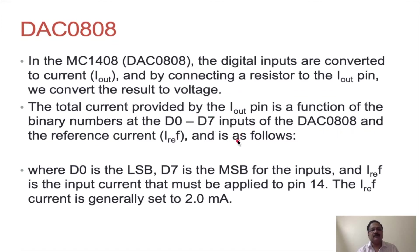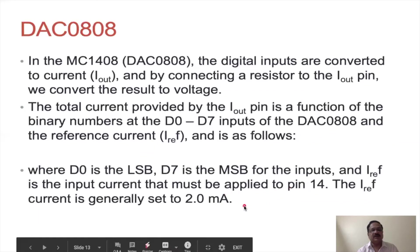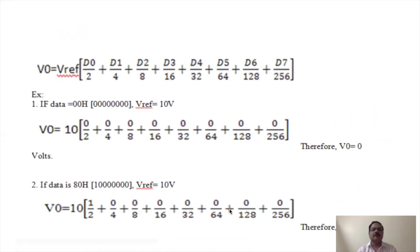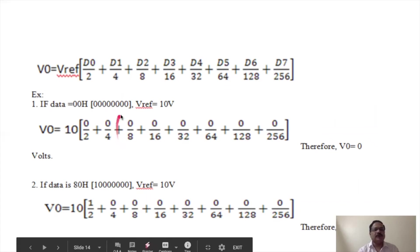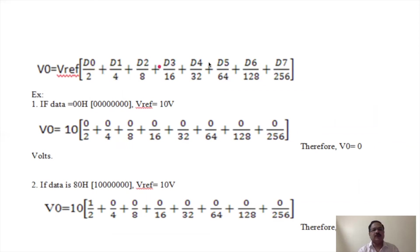The reference current I_reference must be applied to pin 14 and is generally set to 2mA. The output voltage formula is: Vout = V_reference × (D0/2 + D1/4 + D2/8 + D3/16 + D4/32 + D5/64 + D6/128 + D7/256), where D0 is the LSB and D7 is the MSB.